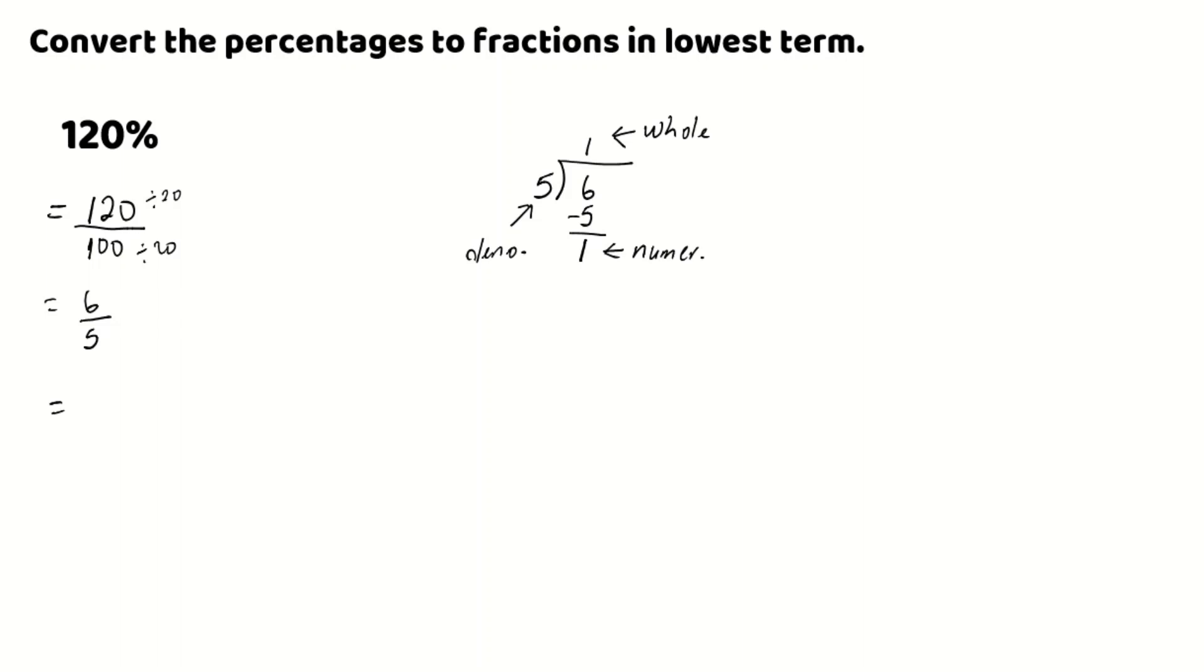And now writing this back as a mixed number, my 1 which is my whole number will be written large, and my numerator 1 will be written over my denominator of 5. So as a mixed number, my percentage 120% is 1 and 1 fifth.